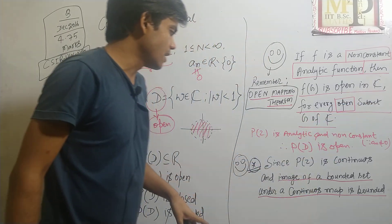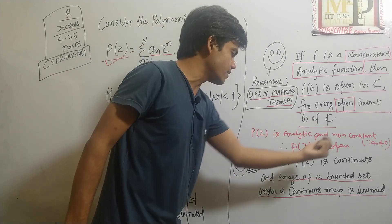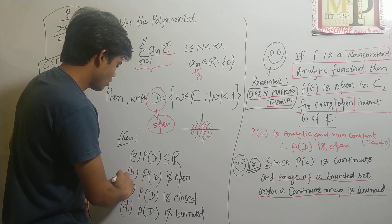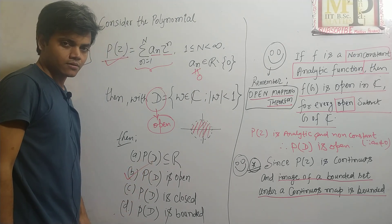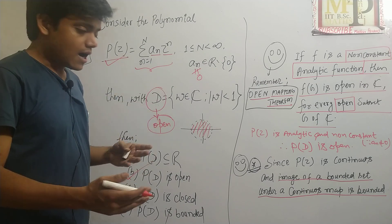Why? Because for any function F, a non-constant analytic function F, F of G is open in C for every open subset G of C. And the same case is here: P of Z is a non-constant analytic function, D is open, therefore P of D is open. So yes, option B is the correct option. As this is the question from section C, more than one answer may be correct.